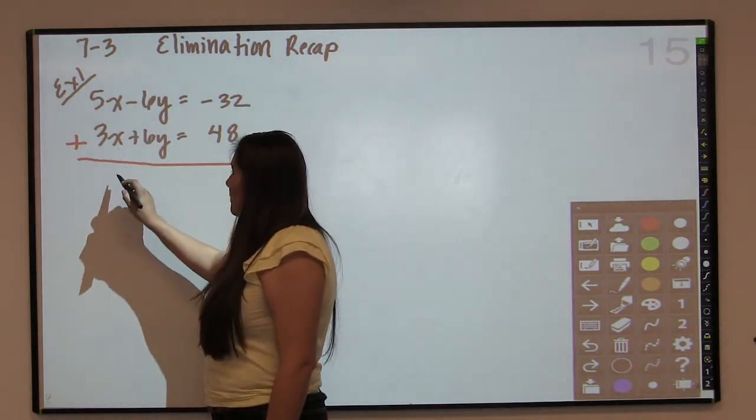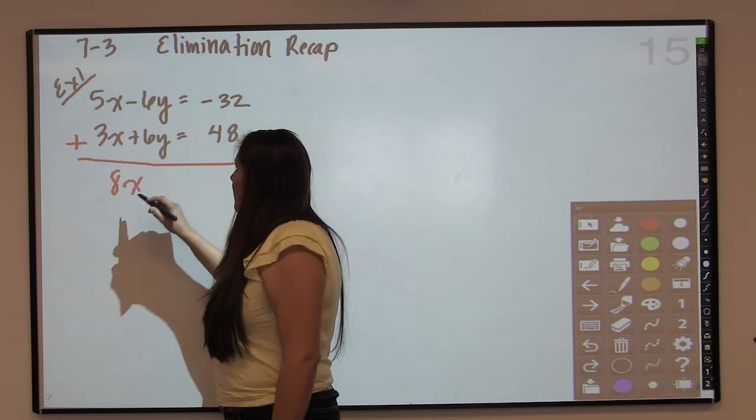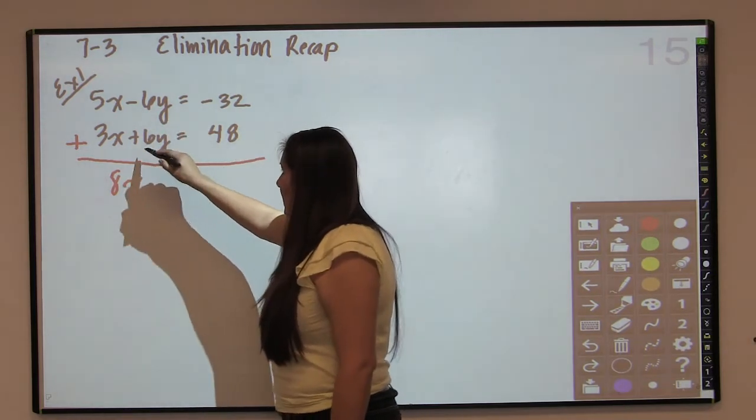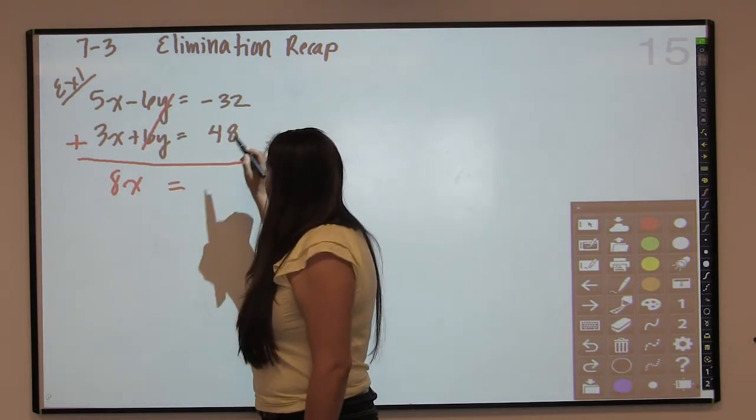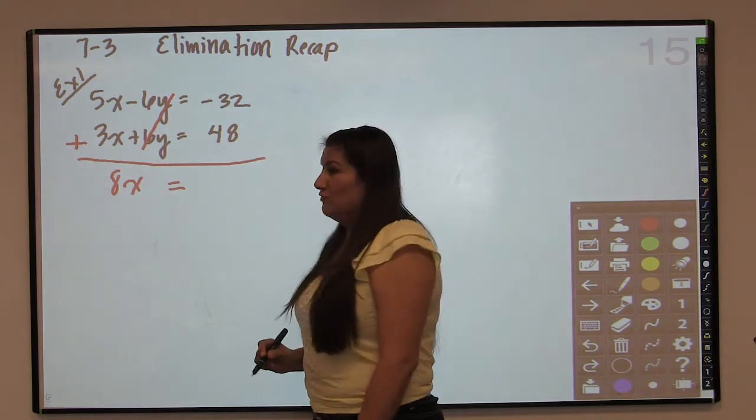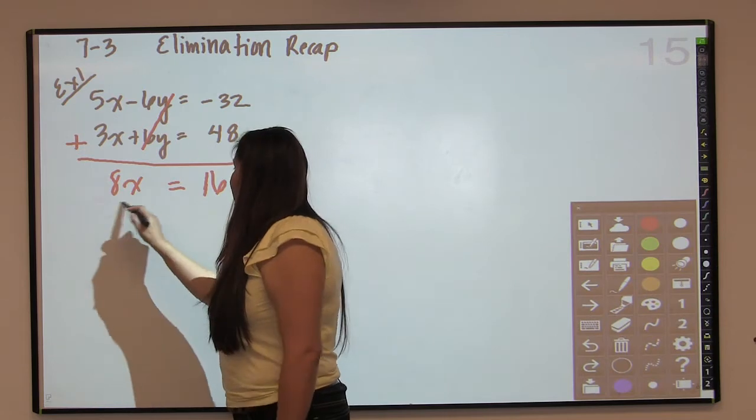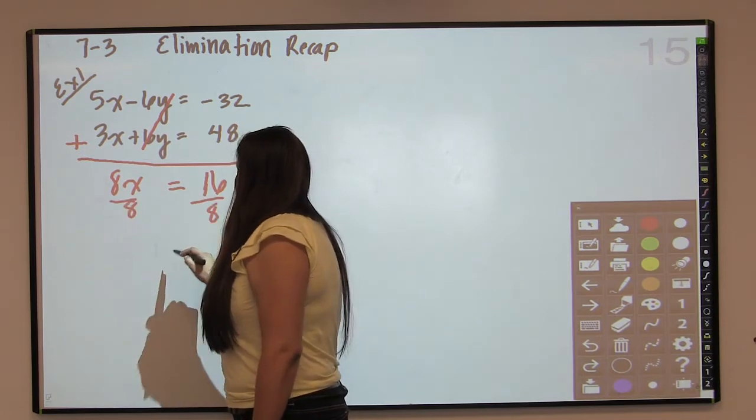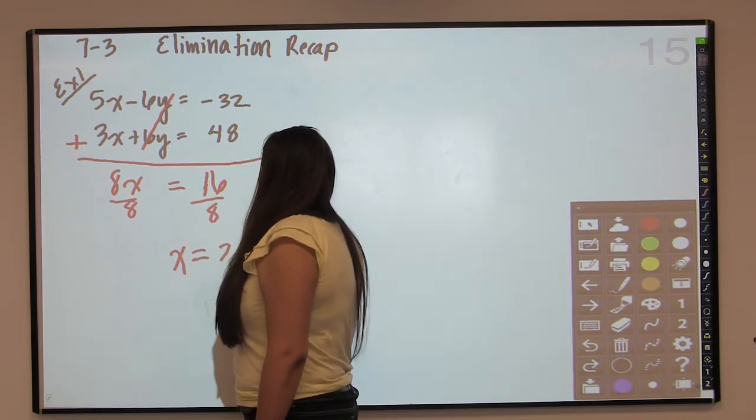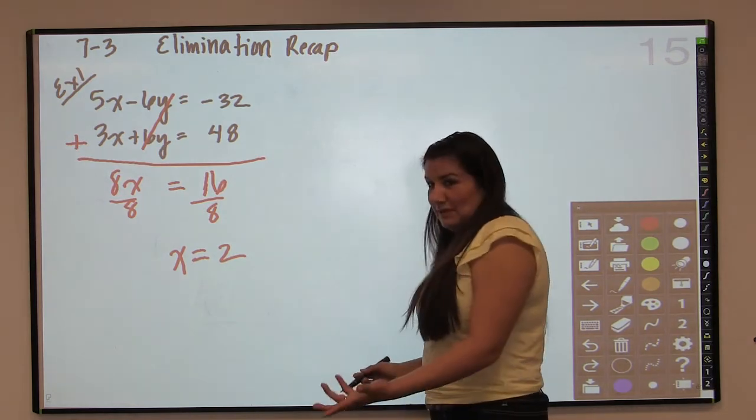So 5x plus 3x gives us 8x, and negative 6y plus 6y cancels. And so then we get negative 32 plus 48 is 16. Divide by 8, and x equals 2. And that's how simple elimination can be.